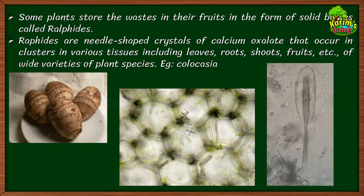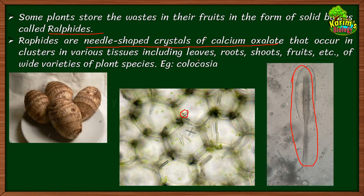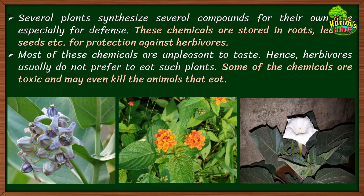Some plants cannot excrete all the waste material, so they store it in their fruits in the form of solid bodies. One example is raphides — needle-shaped crystals of calcium oxalate. These occur in clusters in various tissues of some plants, including colocasia. They are present in the leaves, roots, shoots, and fruits of such plants.